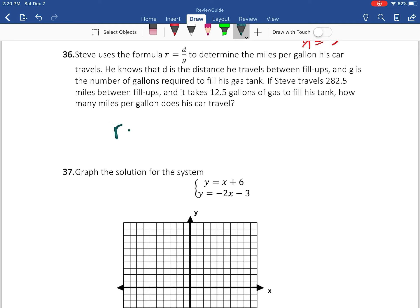Okay, so I'm going to say r equals d over g. So that's going to be 282.5 over 12.5. And that's going to give me, let's see, 282.5 divided by 12.5.